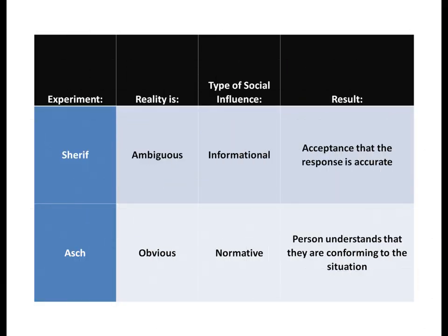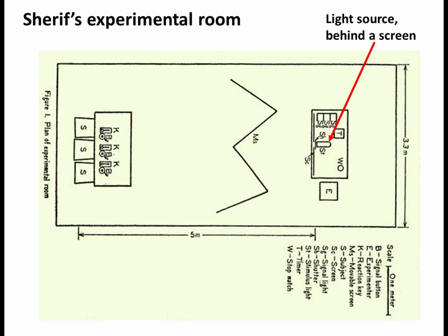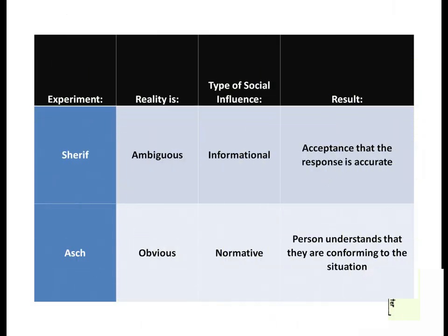If you recall from last time, the Sherif experiment used a dot of light against a black background that appeared to be moving — in fact it was stationary. When confederates sitting next to the real subject gave estimates of the amount of movement, that influenced how much the true subject believed the dot was moving. Reality becomes altered based on social information about an ambiguous stimulus. The subject uses information from others to make up their mind about how far the dot is moving — that's informational influence.